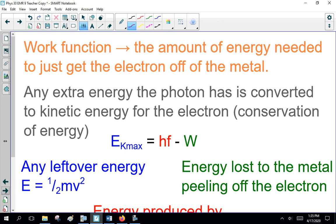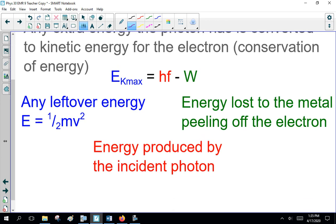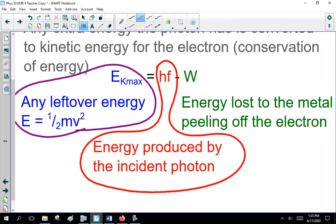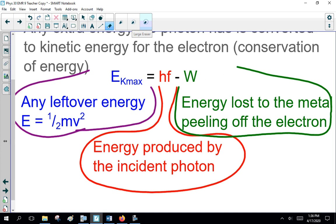This work function, the amount of energy needed to just get the electron off the metal. Any extra energy the photon has is converted to kinetic energy for the electron by conservation of energy. The kinetic energy maximum, or any leftover energy, 1/2 mv squared. HF is the energy produced by the incident photon, notice not F sub 0, because it's beyond that threshold frequency, and W is the energy lost to the metal of the work function, peeling off the electron. You can see why this would be popular on the diploma exam, and hence tests, because there's a lot of stuff here, and this formula's not directly on your formula sheet. Kinetic energy equals HF minus W, a newish formula to remember.